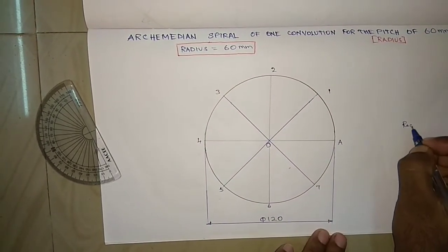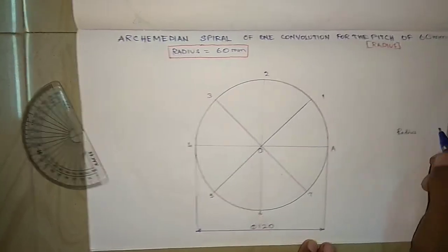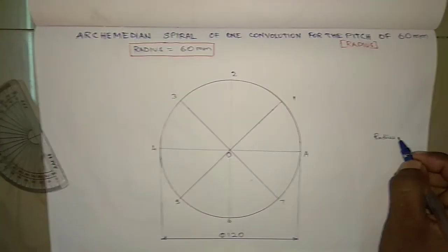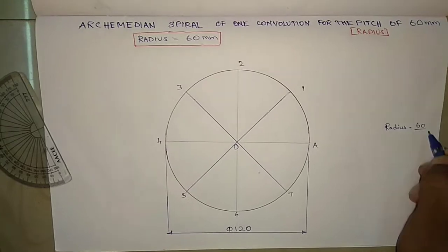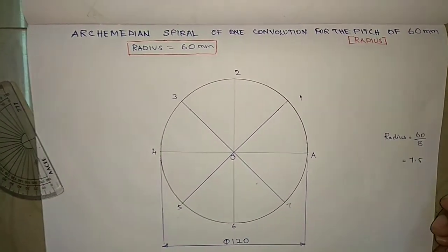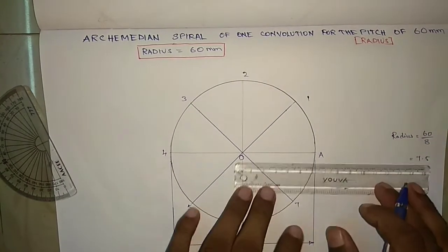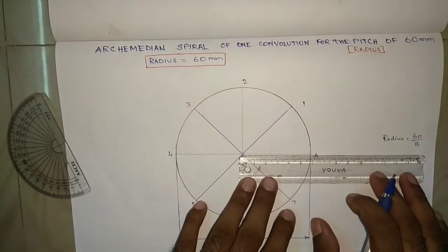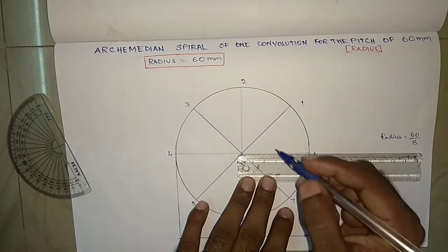Then the OI distance should be divided into 8 equal parts. We know the OI distance is 60mm divided by 8 is 7.5mm. So using the scale, each 7.5mm make a point.